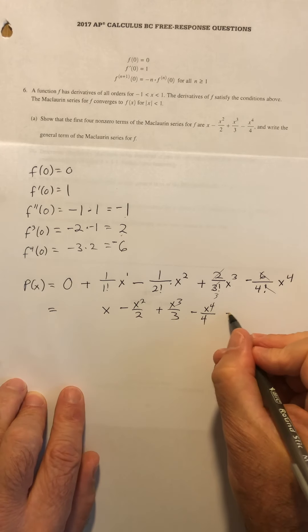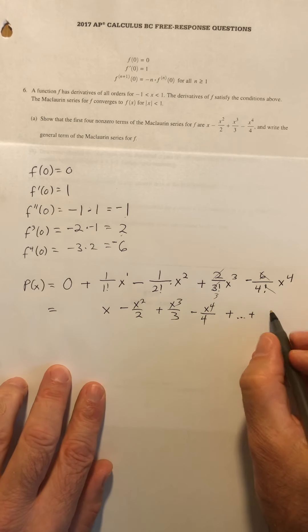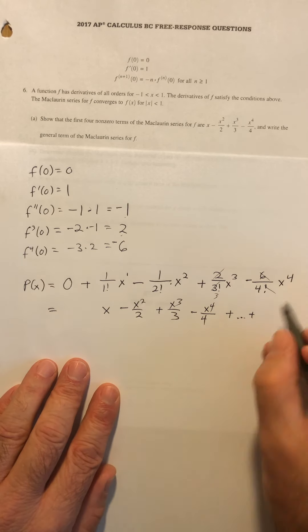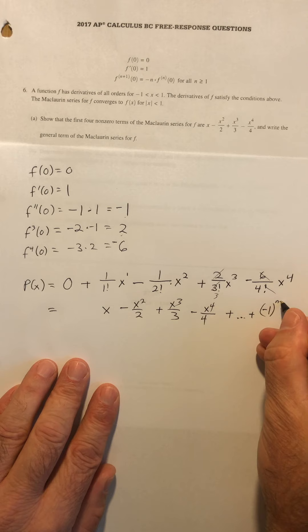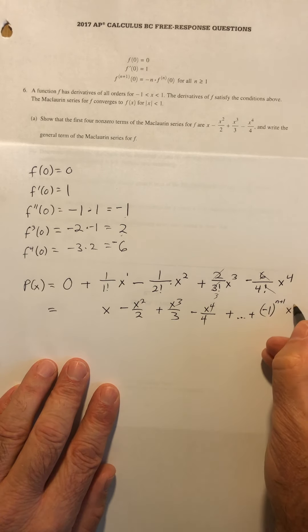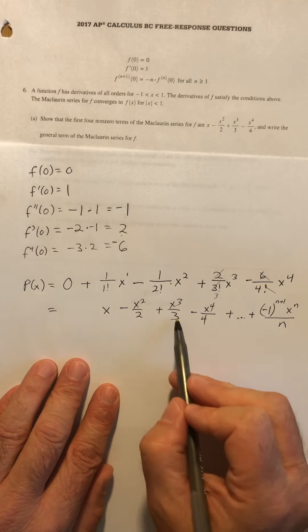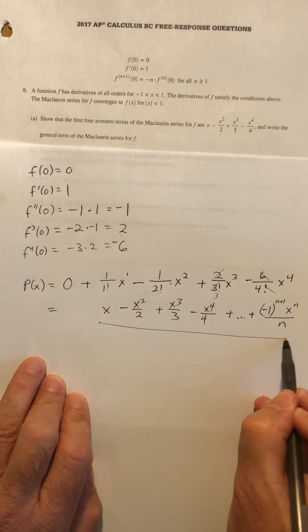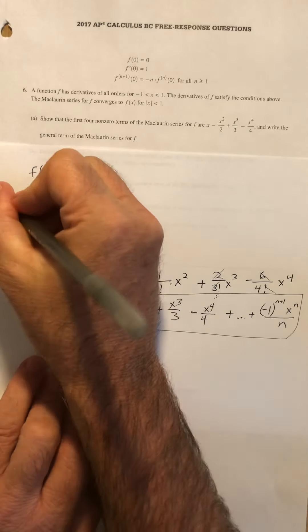And then it wants the general term as well. And so I have to be able to write that general term, which is what's the nth term going to look like. So I have an alternating series. I want to have a negative one. Since the first term is a positive, I would want a n plus one here or an n minus one. And then I have x to the n over n every single time, right? So alternating signs and then x to the n over n, x to the third over three, x to the fourth over four. That should be my answer to part A and six A.